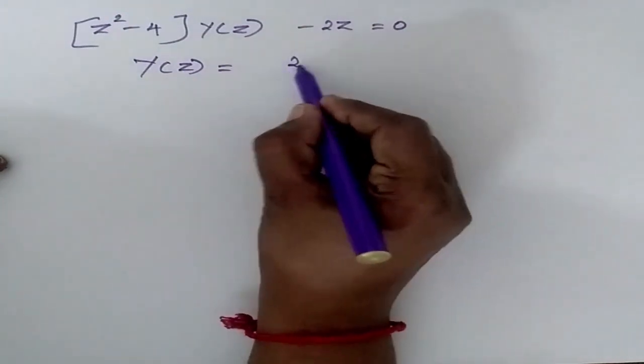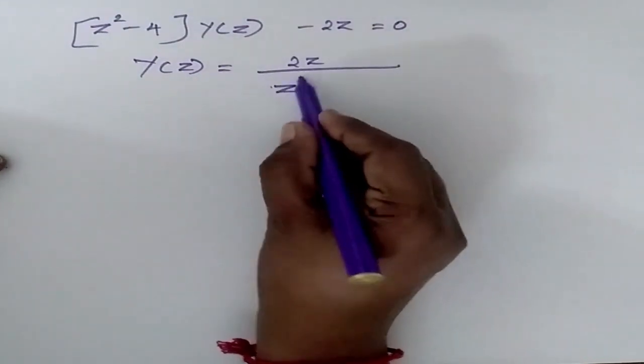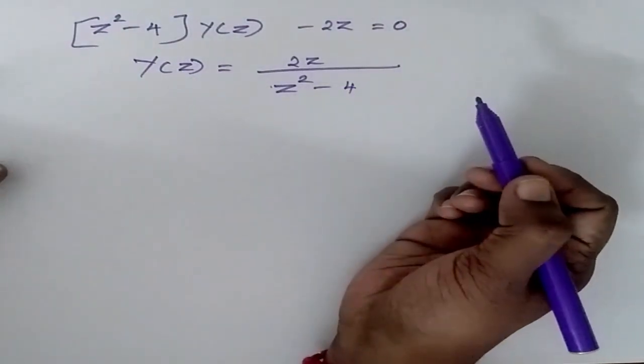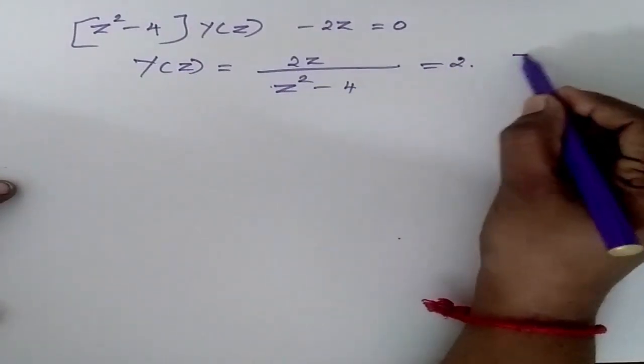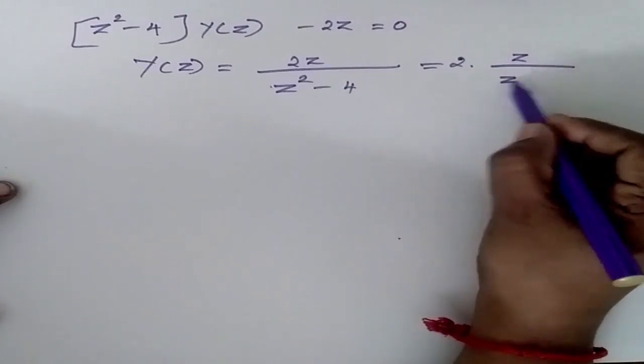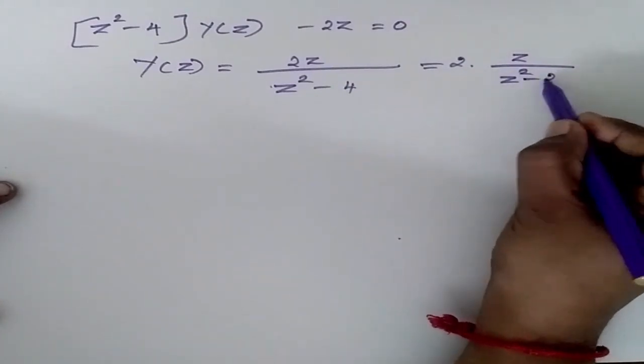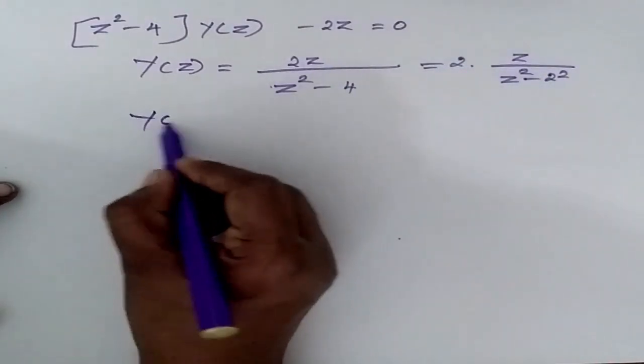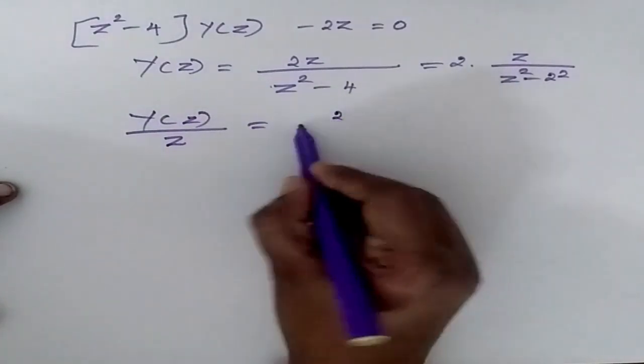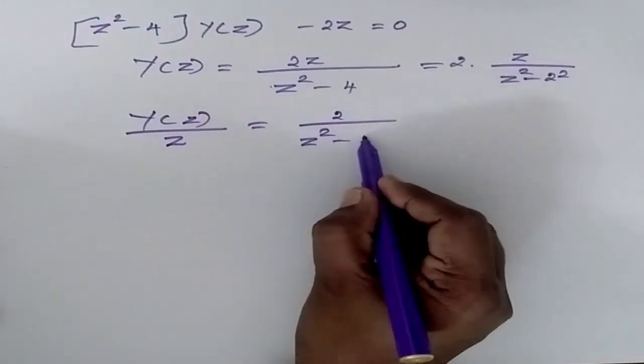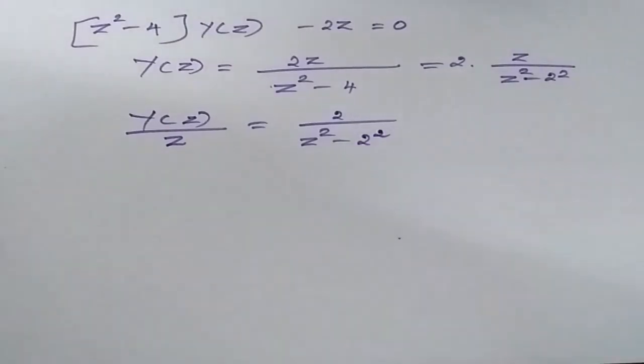Now y of Z is equal to 2Z by Z square minus 4. So this can be written as 2 into Z by Z square minus 2 square. Now my y of Z by Z is equal to 2 by Z square minus 2 square.